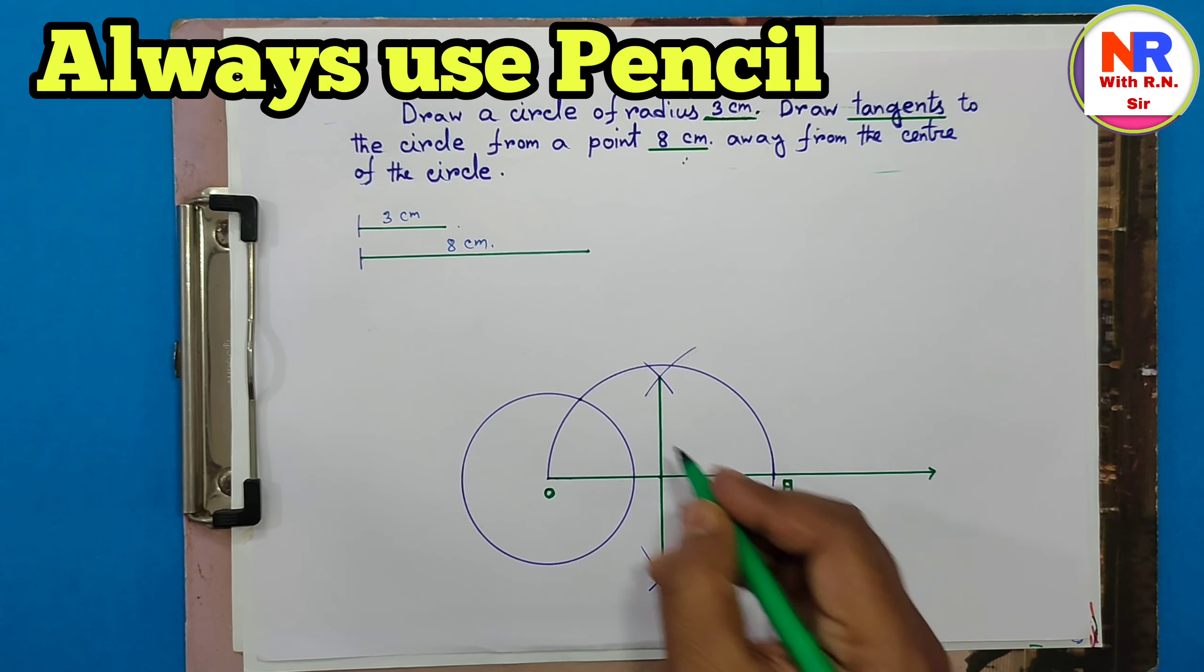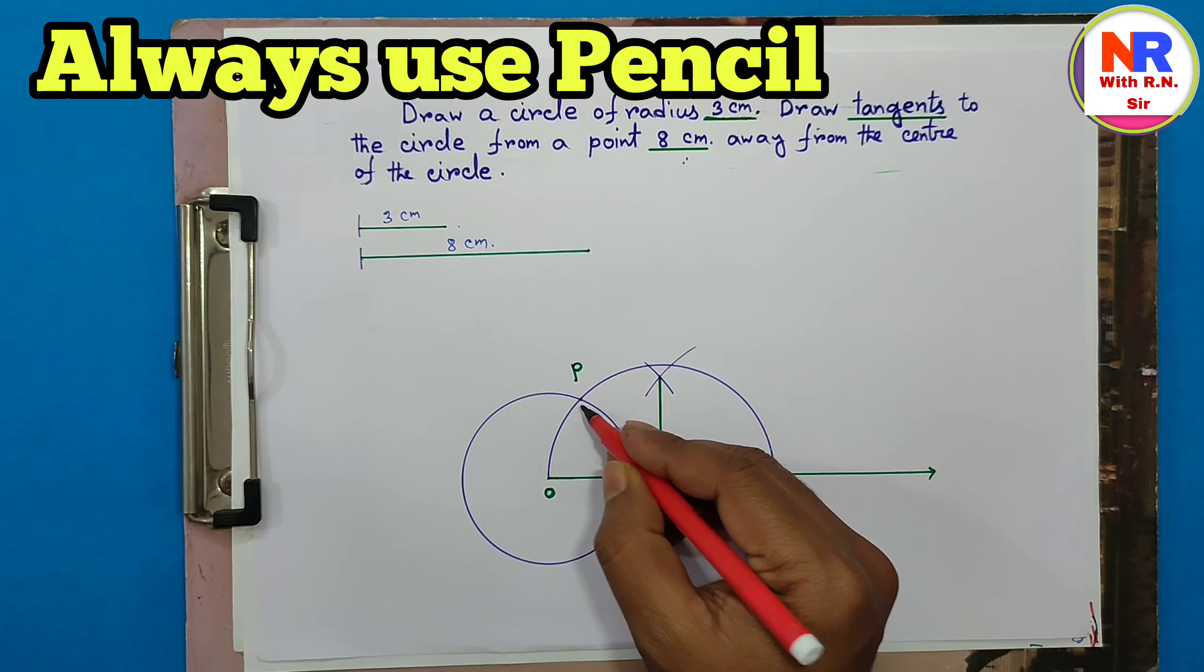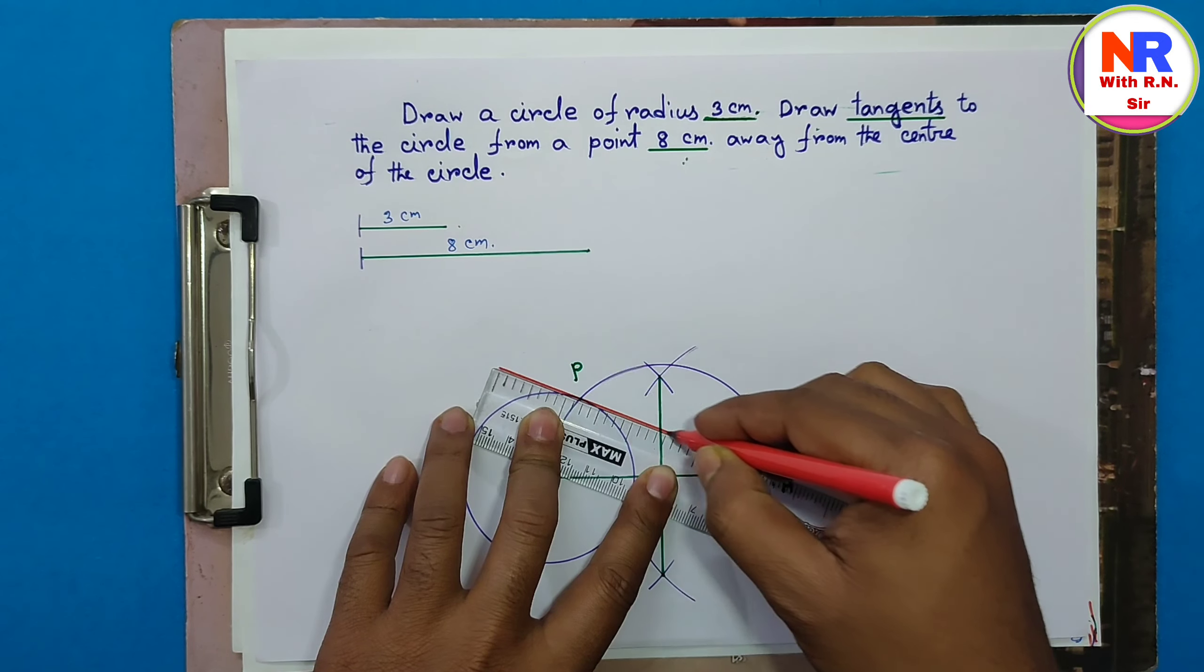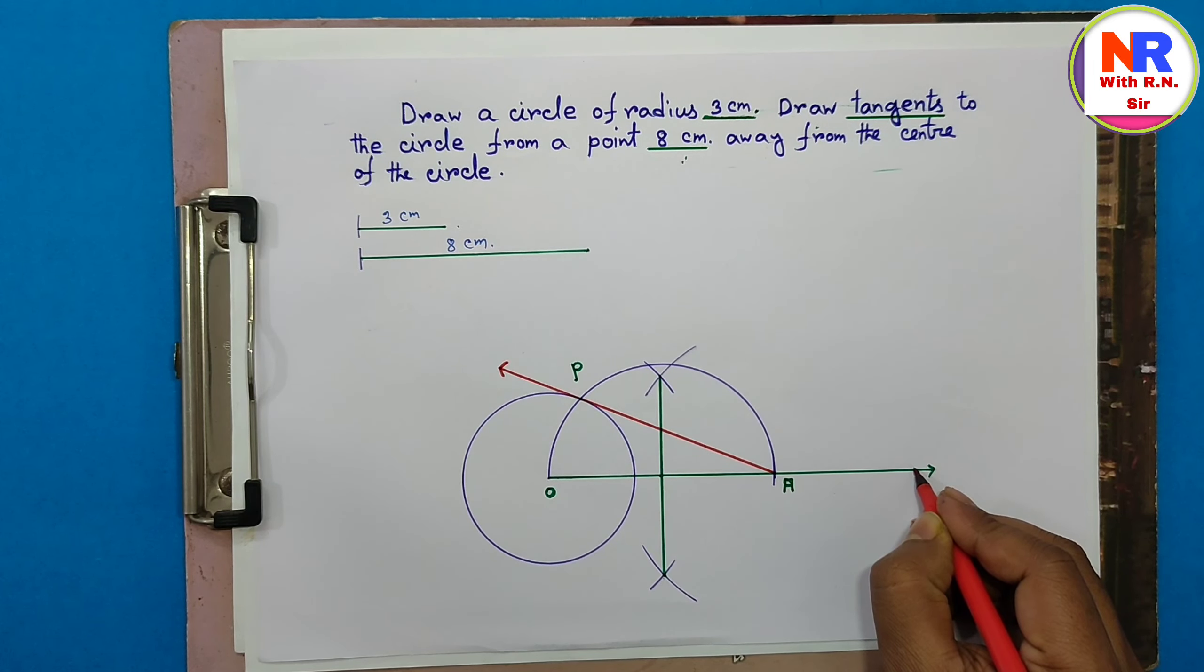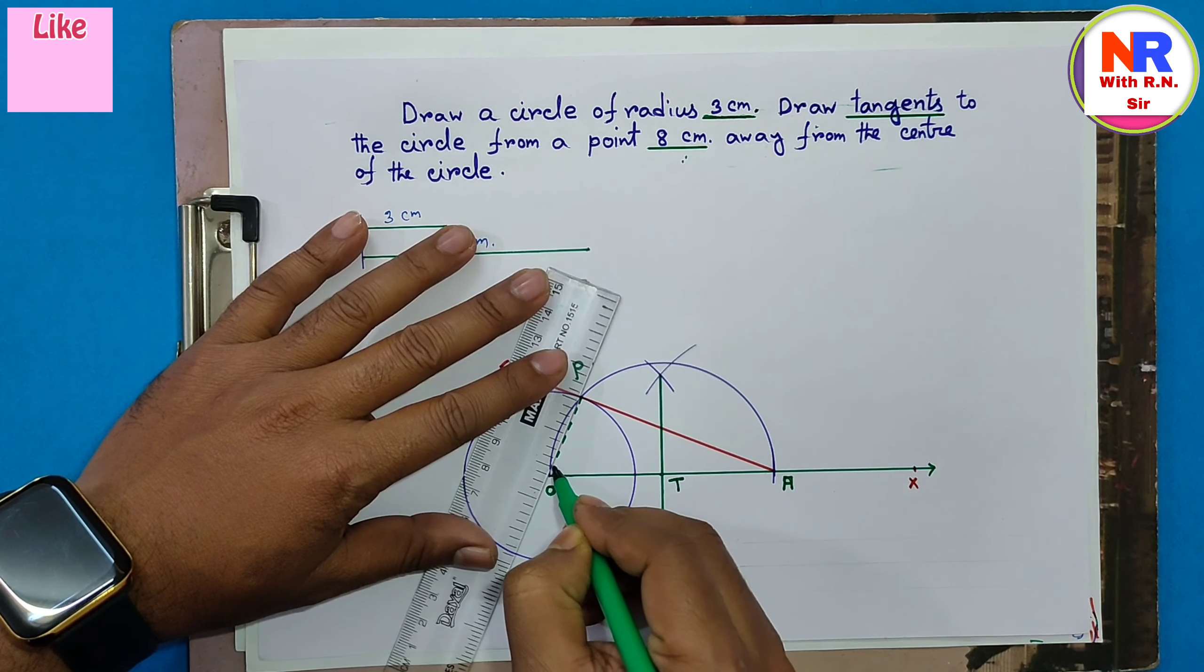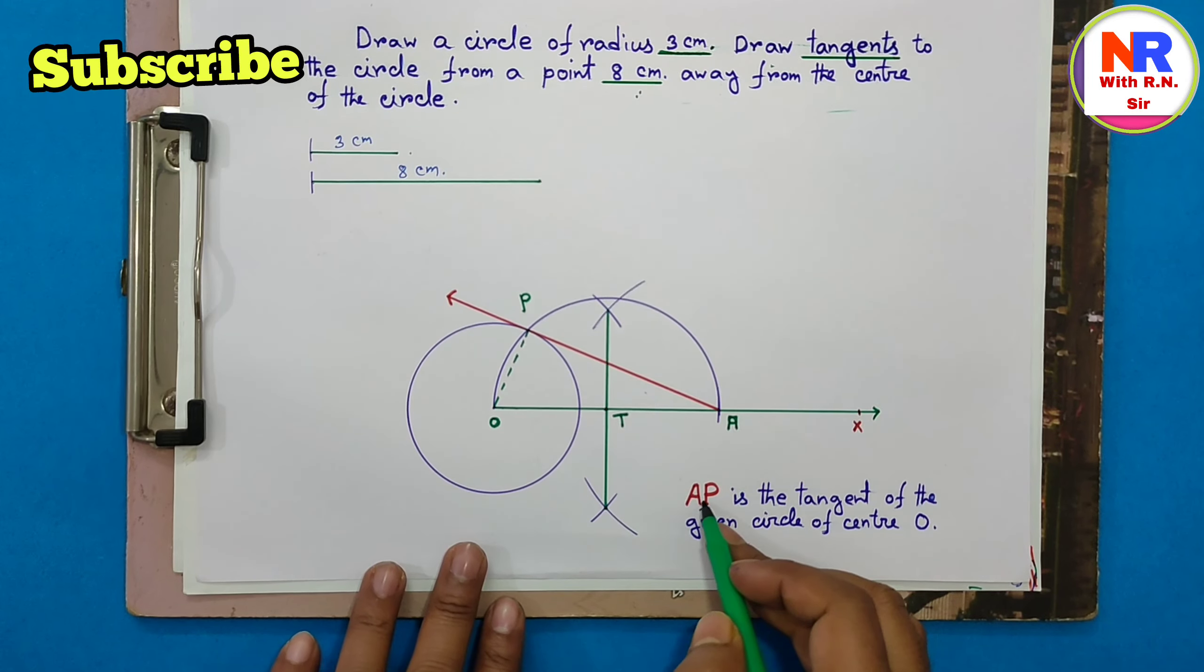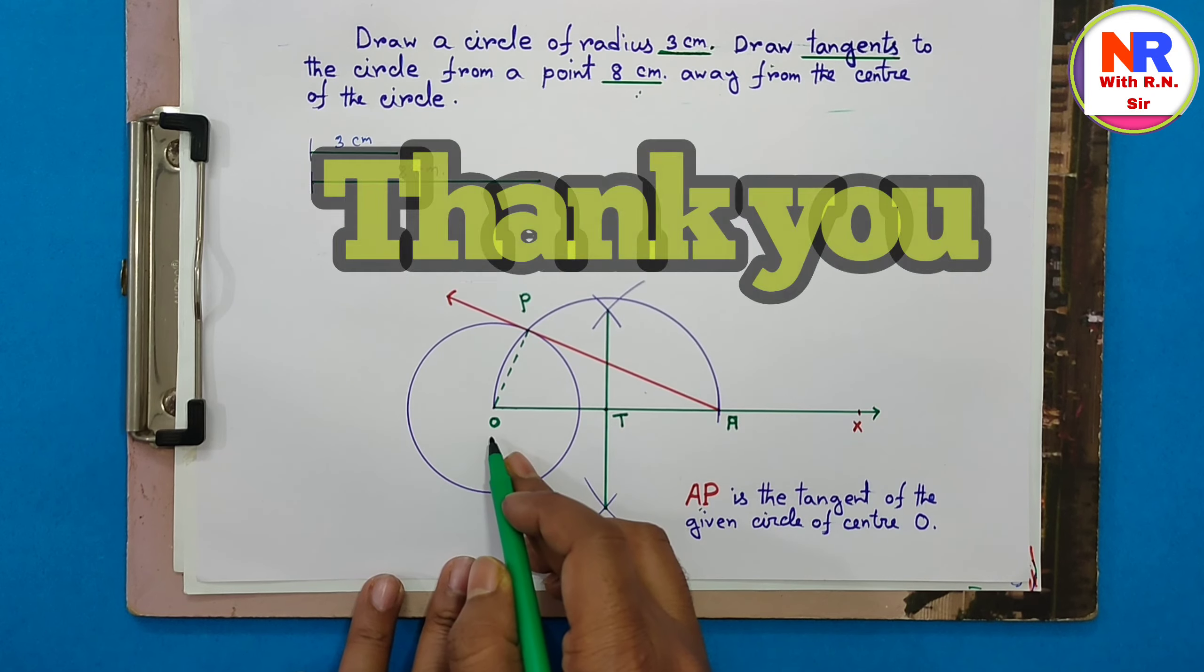Now we are getting here one point, suppose the point name is P. Now from this point join these two points. So this is the tangent and give here a point X. Now make here a dotted line and this point will be T. Therefore AP is the tangent of the given circle of center O.